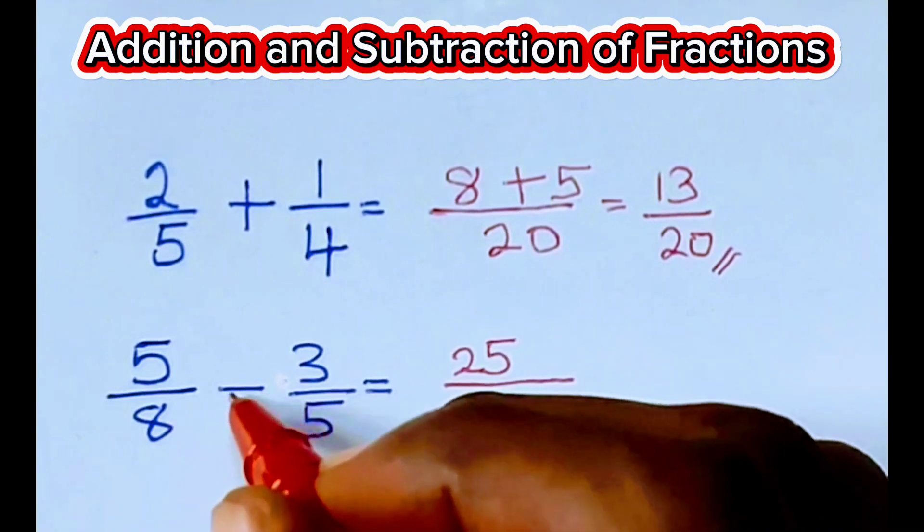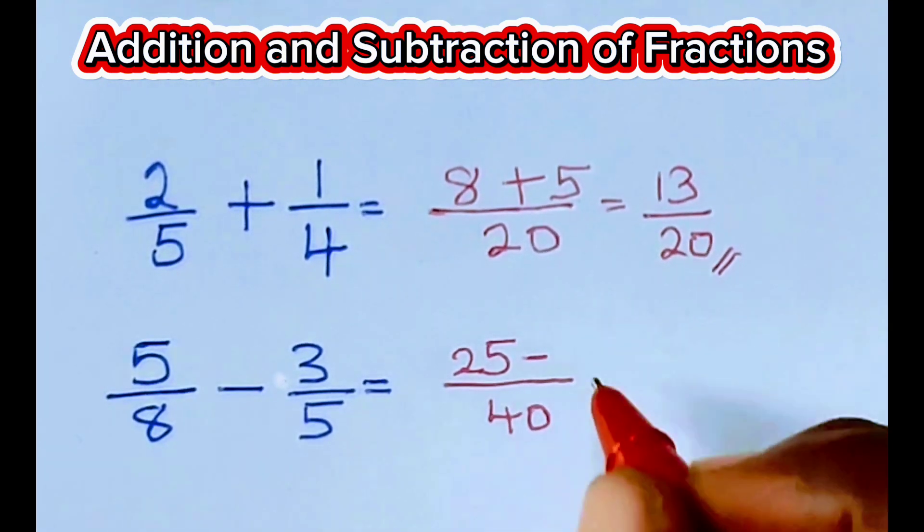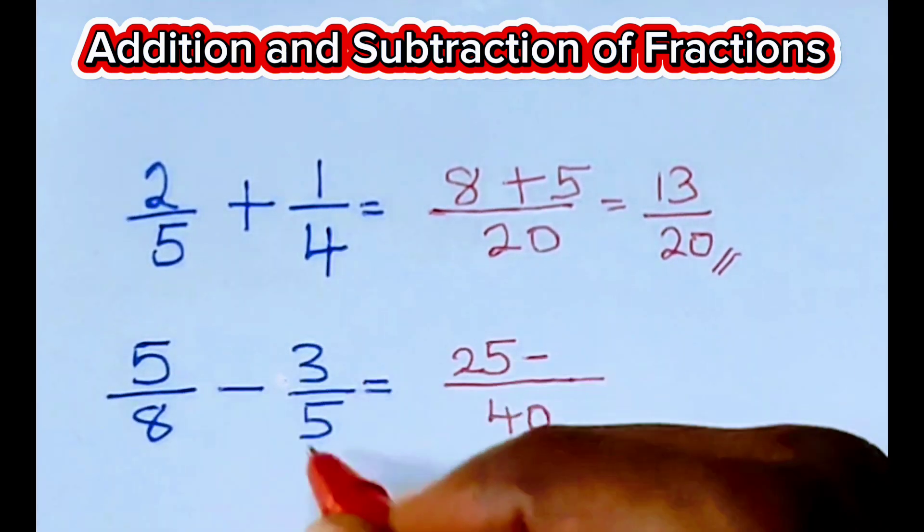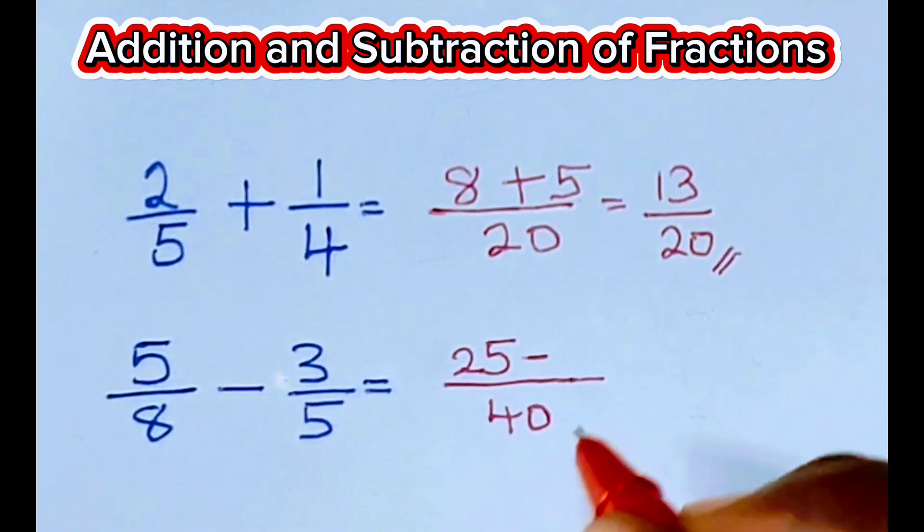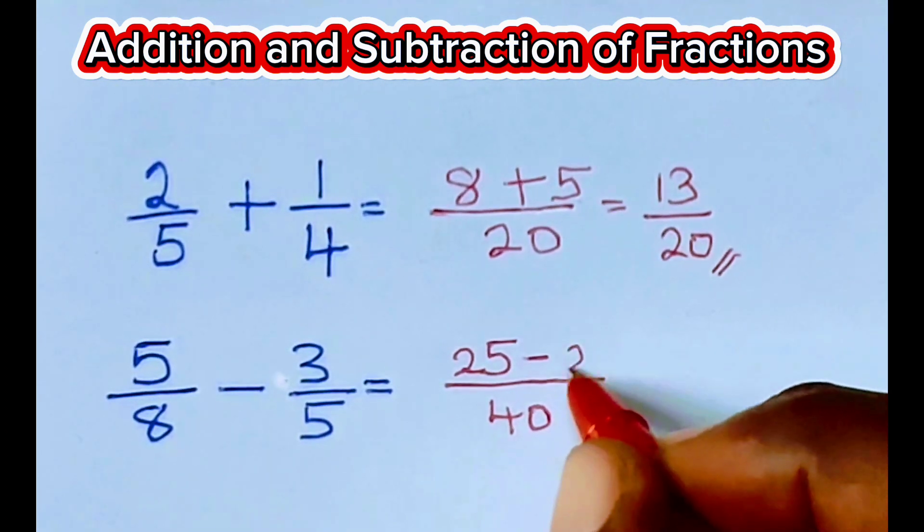The sign we have here is minus. So we are placing minus here. And then we do the same to this fraction. 40 divided by 5, that's 8. 8 times 3, that's 24.